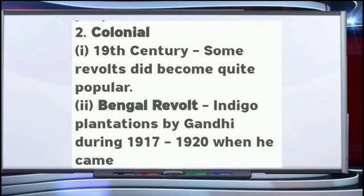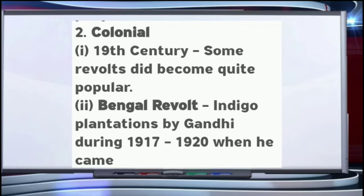Indigo plantation movements were supported by Gandhi during 1917 to 1920. When he came back from South Africa, he traveled all across India helping people. There were two important movements: Champaran and Bardoli. The Bardoli Satyagraha was in 1928, in Surat district — a non-tax campaign as part of the nationwide non-cooperative movement, a campaign of refusal to pay land revenue. The second was the Champaran Satyagraha, 1917 to 1918, directed against indigo plantation.